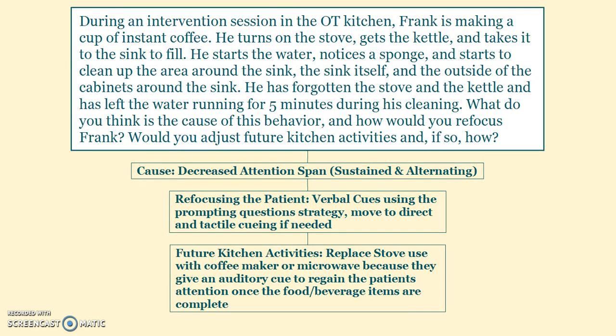Scenario three: During an OT kitchen session, Frank is making instant coffee. He turns on the stove, gets the kettle, fills it at the sink, then gets distracted by a sponge and begins cleaning around the sink and cabinets — forgetting the stove and leaving the water running for five minutes. The cause is decreased attention span, particularly sustained attention and alternating attention. Sustained attention affects his ability to focus on one task for a long period, and alternating attention affects his ability to shift between tasks and return to the first.